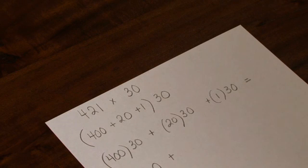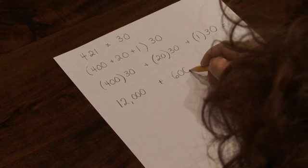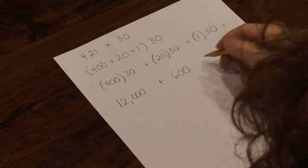And again, another 200. So 20 taken 30 times is 600.